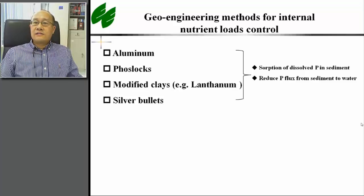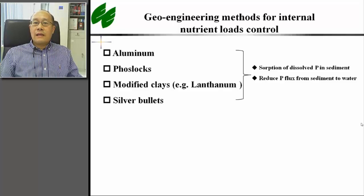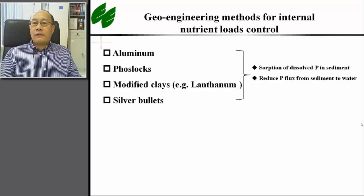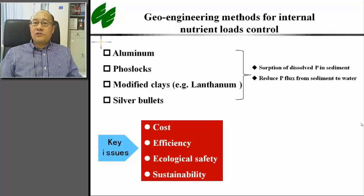So far, several methods have been studied for the purpose of internal phosphorus control, such as the applications of aluminum, iron flocs, lanthanum-modified clays, and silver bullets, which will be discussed in detail by our invited speakers. Future studies in this area should consider the key issues of cost, efficiency, ecological safety, and sustainability of the method.